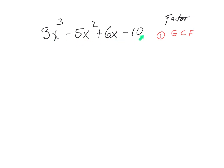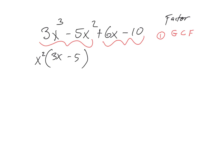This is not a quadratic, so I'm not going to be using those methods, but I do have a couple of groups so I can try factor by grouping. Do 3 and 5 have a common factor? No. Do x cubed and x squared have a common factor? Yes — they can both be divided by x squared, leaving me with 3x minus 5. Factoring x squared out of x cubed leaves 1x; x squared out of x squared leaves no x's.